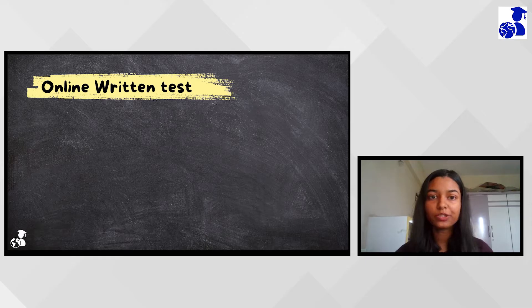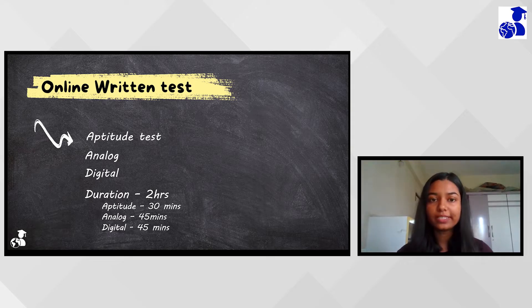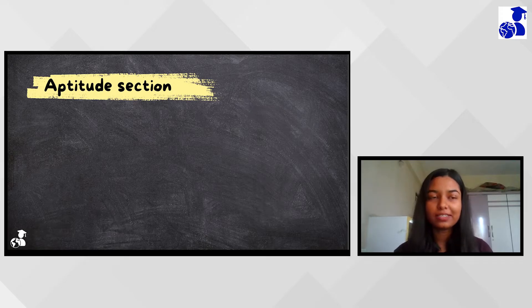In the online test, there were three sections: aptitude, analog, and digital. The overall duration was two hours, divided into 30 minutes for aptitude with 20 questions, and 45 minutes each for digital and analog with 20 questions each.